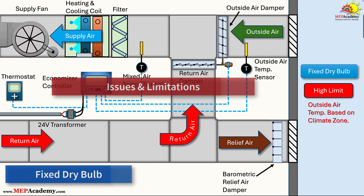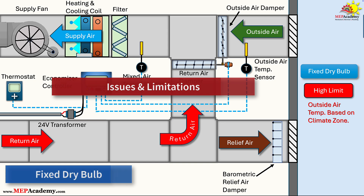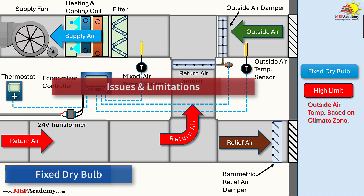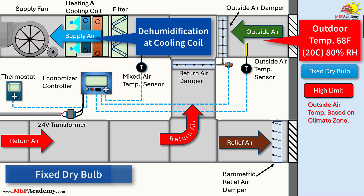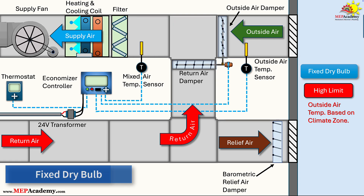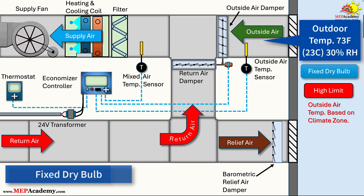Issues and Limitations. While straightforward, the fixed dry bulb strategy can encounter errors in certain conditions. For instance, it may incorrectly enable the economizer when outdoor air is cool but very humid, such as 68°F and 80% relative humidity, leading to increased latent loads – humidity – that require additional dehumidification energy. Conversely, it might disable the economizer prematurely in dry, warm conditions where outdoor air could still provide sensible cooling benefits, such as 73°F and 30% relative humidity.